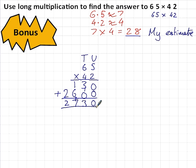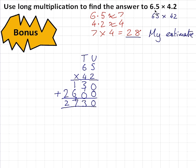So I've got the answer that involves 2730. How many numbers were there after the decimal points in the original question? There were two. There's one there and there's one there. So that means in the answer, starting from the right-hand side, there's also going to be two numbers after the decimal points. 27.30. Does that look right? Well, if I compare it to the estimate, yep, it does look right.